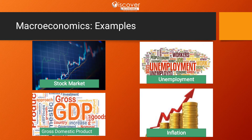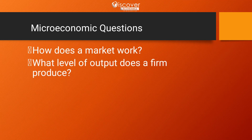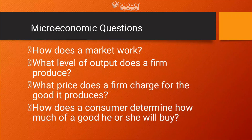Inflation is also a macroeconomic topic. Inflation could be due to many reasons — there might be a demand-supply gap, or imported inflation when we buy things from abroad and sell them in our country. Microeconomic questions include: how does a market work? What level of output does a firm produce? What price does a firm charge for goods it produces? How does a consumer determine how much of a good he or she will buy?